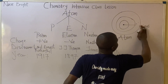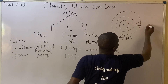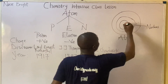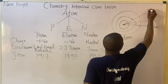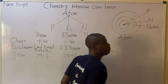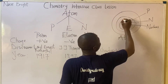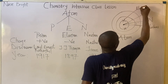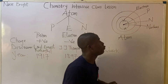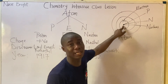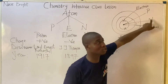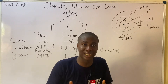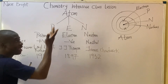In the nucleus of an atom we have two important subatomic particles: protons and neutrons. We have another subatomic particle that revolves around the nucleus — these are called electrons. Electrons are found specifically in what we call orbits.